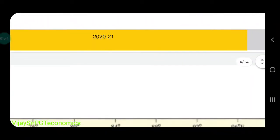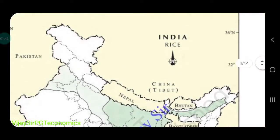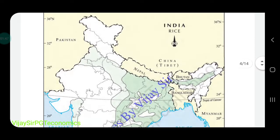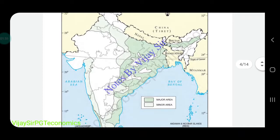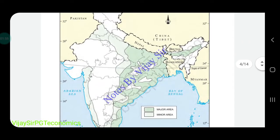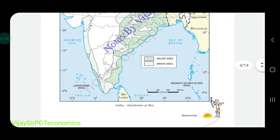Here on this map of India, you can see the major and minor areas of rice cultivation. Major areas are shown in dark green, and minor areas are shown in light green.